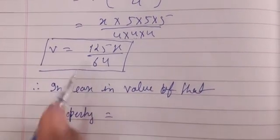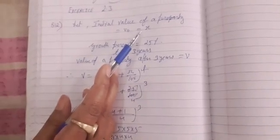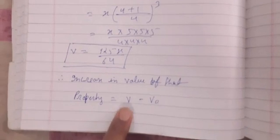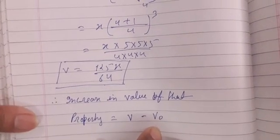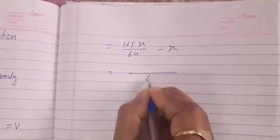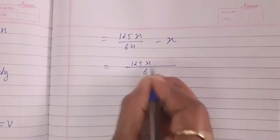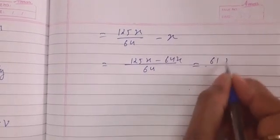...is equal to this minus that. Previously the value was x, and now its value is 125x/64. So we will write v minus v₀, means final value - this is increased value after three years - and this was initial value, that was previous value. So putting this value, this will be 125x/64 minus x. Taking LCM, now this will be 61x/64.